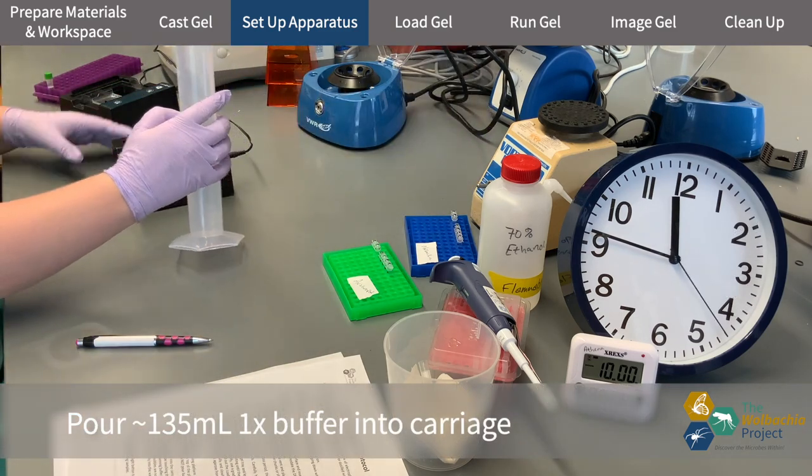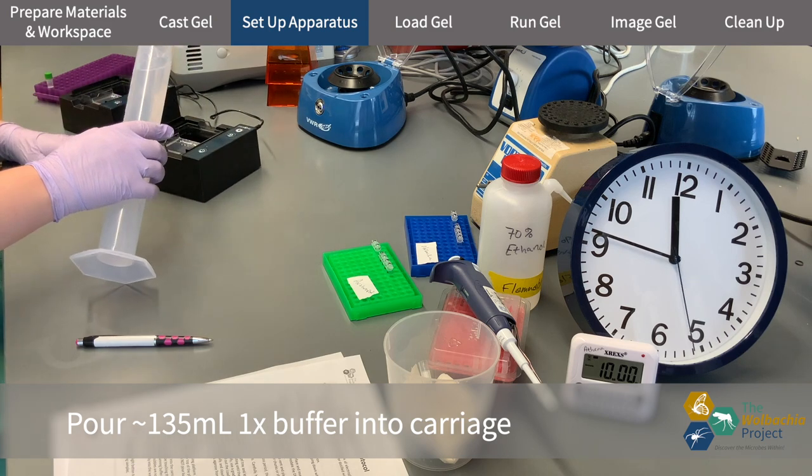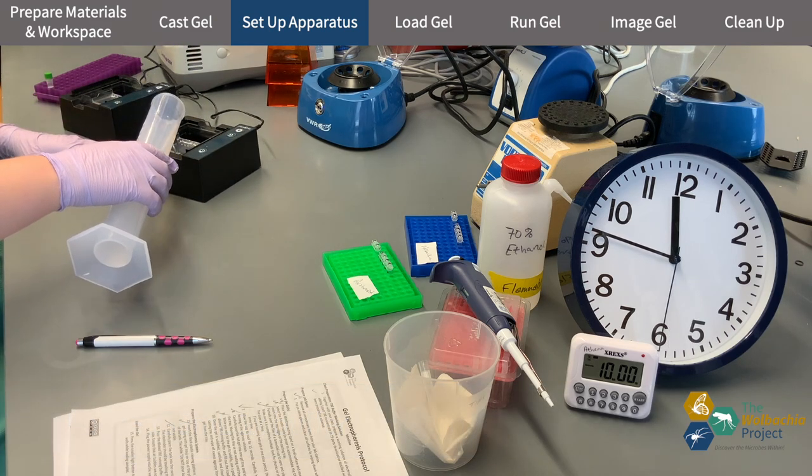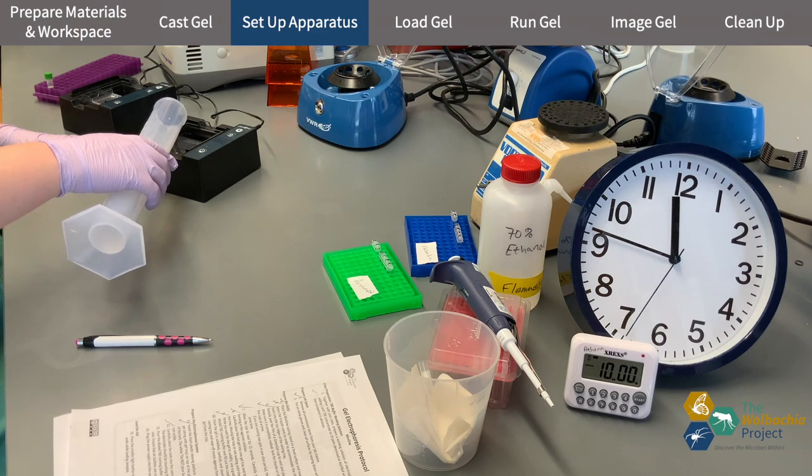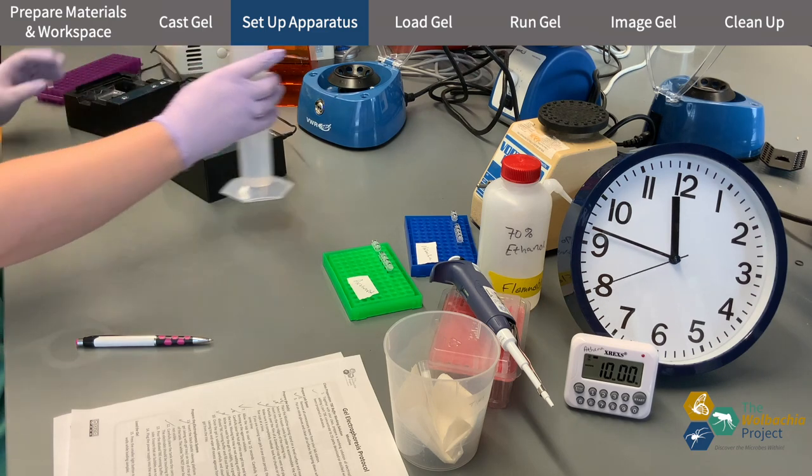Then carefully and slowly add about 135 milliliters of buffer into the clear buffer tank with the gel. The buffer should never go into the black carriage.